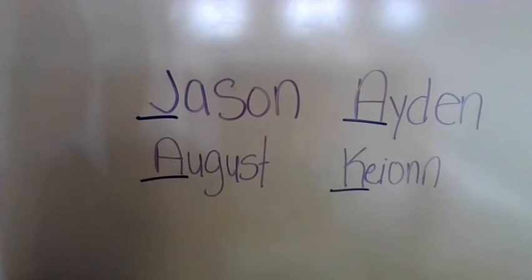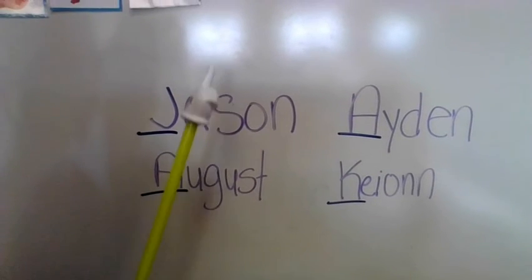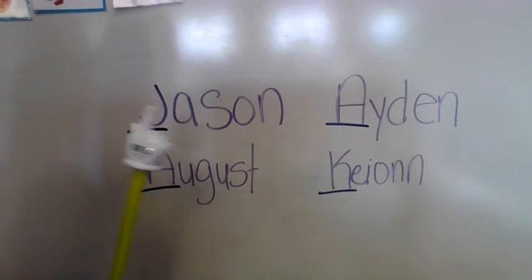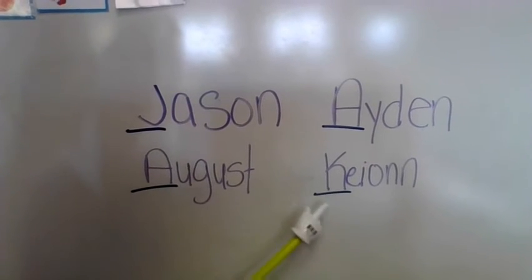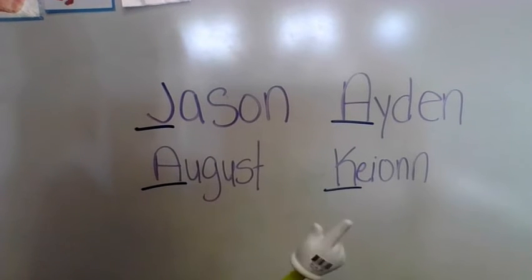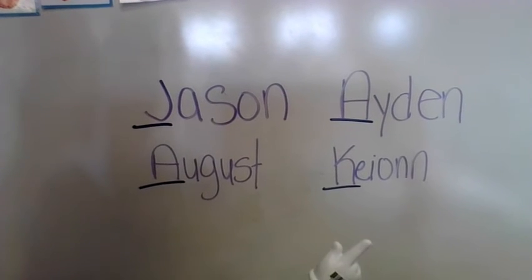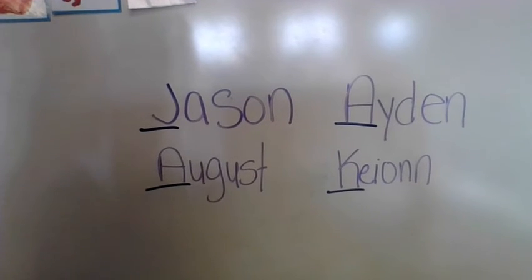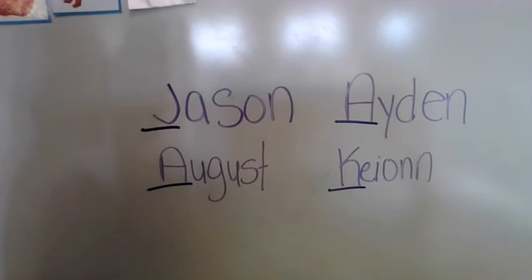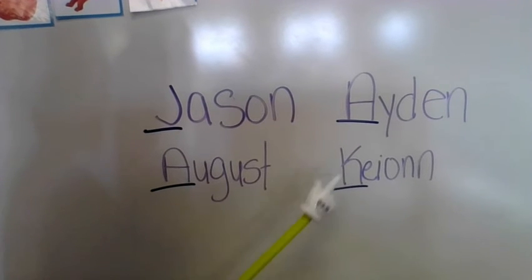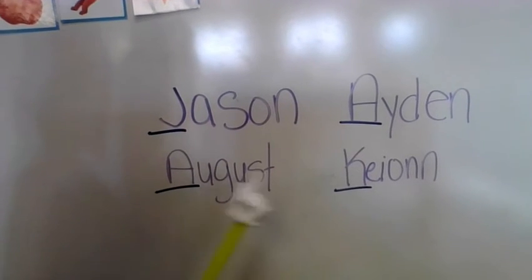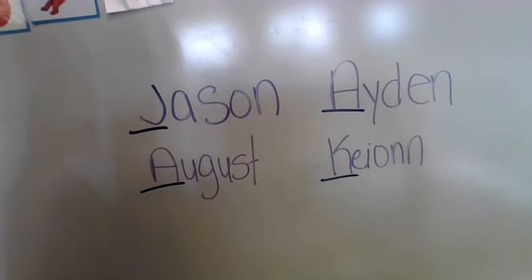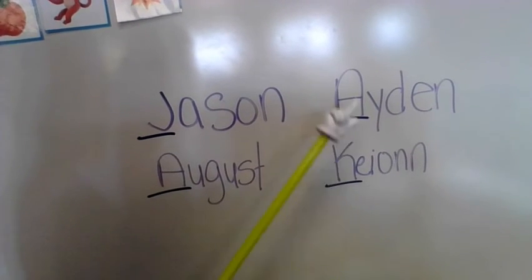Hey friends, I wrote down four of our friends' names: Jason, Aiden, August, Keon. I underlined the first letter of their name — that's the letter you write first whenever you're going to spell their name. Do you see any names that have the same first letter? You are right! Aiden and August have the same first letter. Both of their names begin with the letter A. Say: I can compare letters. That's our focus today — we are comparing letters.